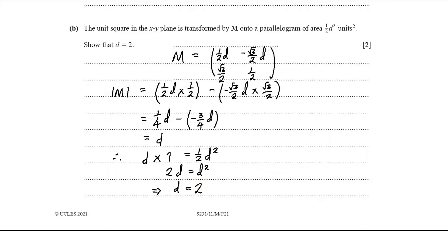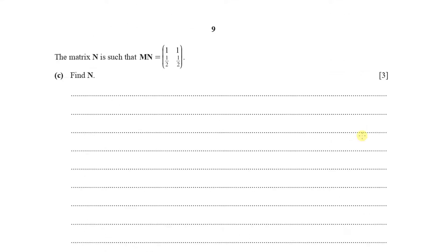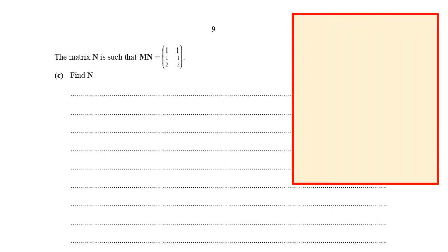Moving to part C: the matrix N is such that MN equals the matrix (1, 1; ½, ½). Find N. To find N, we first need to find the inverse of M. From part A we have M, and from part B we know d = 2. Substituting d = 2 into M gives us the specific matrix M.